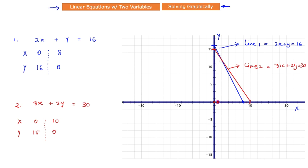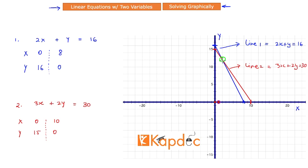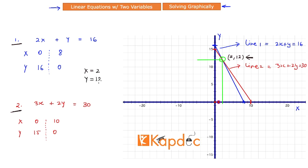Now that both lines are plotted, we look for the one point where they intersect — that is the solution. I can see both lines intersect at a specific point. I'll drop a vertical line to the x-axis and a horizontal line to the y-axis to find the coordinates. The coordinates are x = 2 and y = 12, so the solution to the pair of linear equations is x = 2 and y = 12.